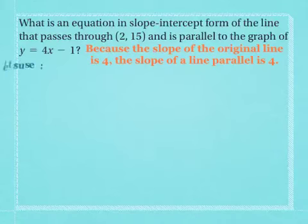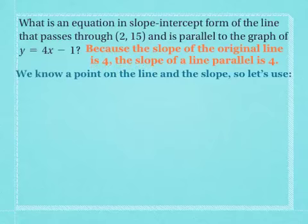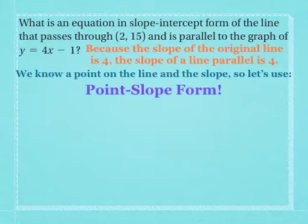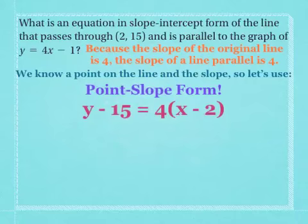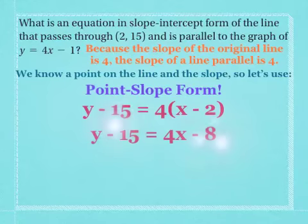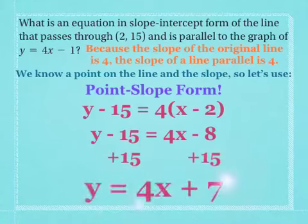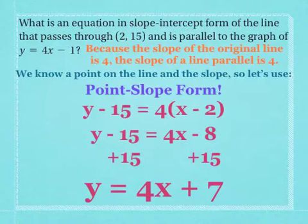We're also given a point on the line. We know the slope is 4 and the point is (2, 15), so let's start with point-slope form: y minus 15 equals 4 times (x minus 2). But the question asks for slope-intercept form. We can convert by isolating y. First, distribute the 4, which gives us y minus 15 equals 4x minus 8. Next, add 15 to both sides and we get y equals 4x plus 7. So the equation of the line through (2, 15) parallel to y equals 4x minus 1 is y equals 4x plus 7.